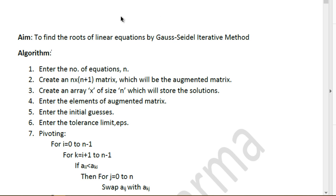Coming to the algorithm: the first step is to prompt the user to enter the number of equations. Since the Gauss-Seidel method requires the number of equations to equal the number of unknowns, this step essentially gets the number of unknowns, stored in a variable called n.